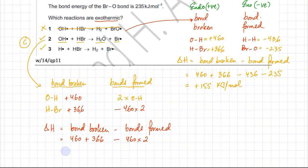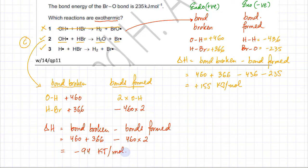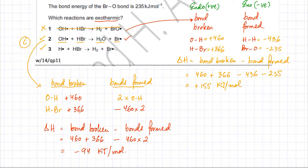Using a calculator, the answer comes out to −94 kilojoules per mole. Since the value is negative, this reaction is exothermic. Option 2 is confirmed correct. Moving to option 3, which we also expect to be exothermic, but we'll solve it to confirm.